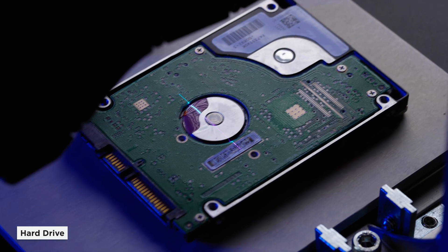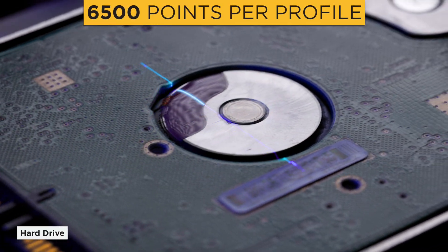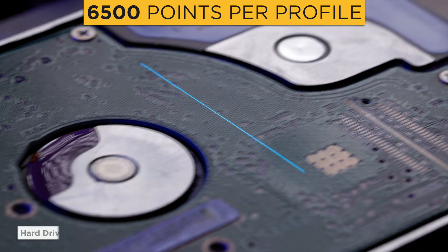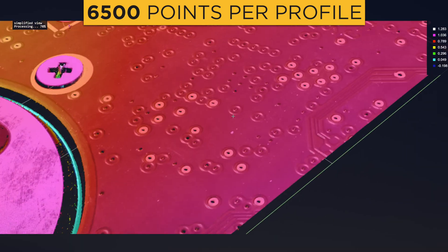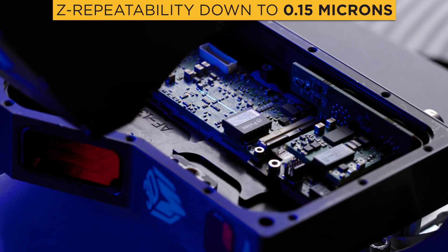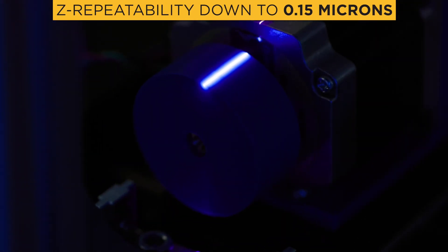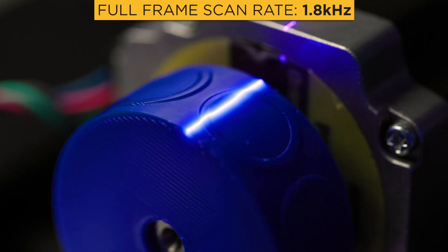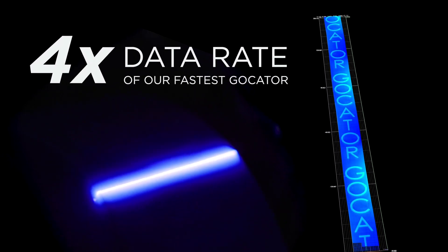The Gocator 6300 series generates over 6500 points per profile for outstanding measurement accuracy. X-profile data intervals reach 2.1 microns, all while delivering data rates approximately four times faster than any other Gocator sensor.